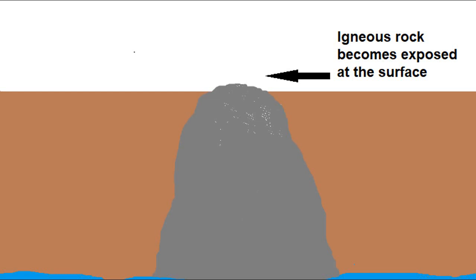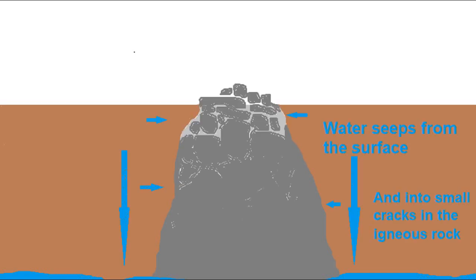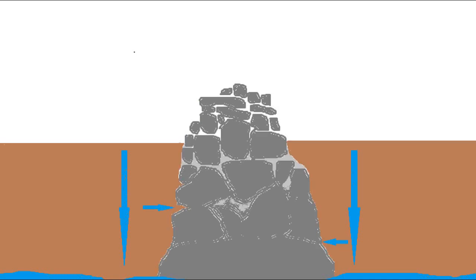So when that becomes exposed, what we're going to start seeing is water getting involved with the rock directly. Water seeping in from the surface goes into little cracks and it wears away these little gaps, these little joints, and the igneous rock starts to get weaker and those little joints...